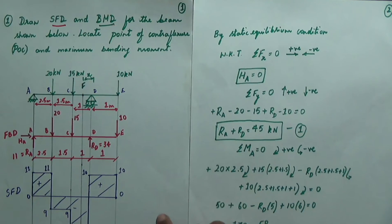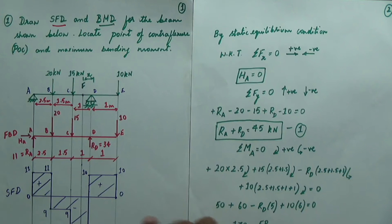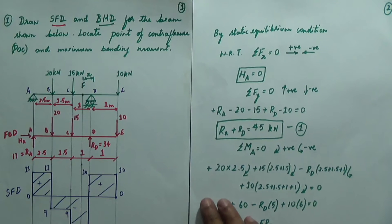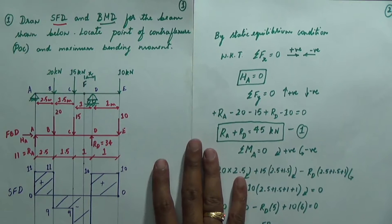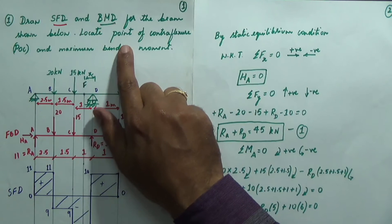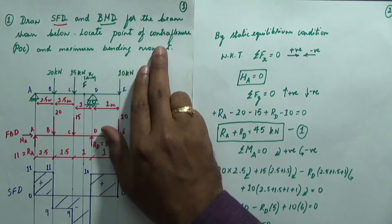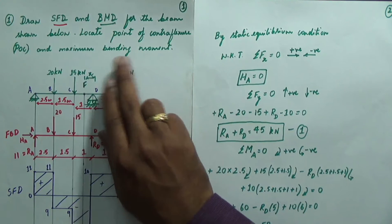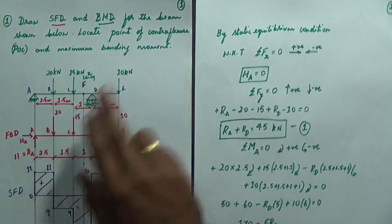Let's summarize the problem. The important points to remember and how marks are distributed in evaluation: first, read the problem correctly and determine what is to be found out. Here, we need to find the SFD, BMD, point of contra flexure, and maximum bending moment — so four parts are to be found out.